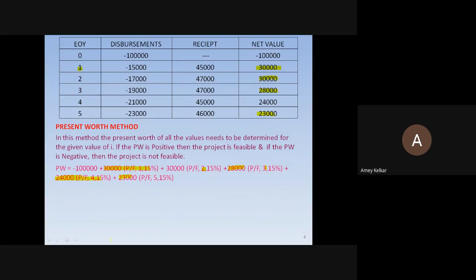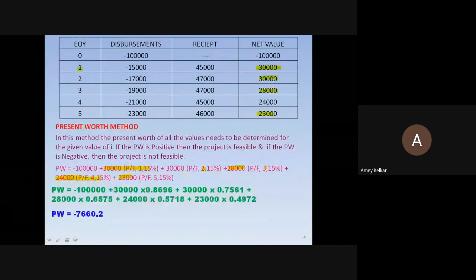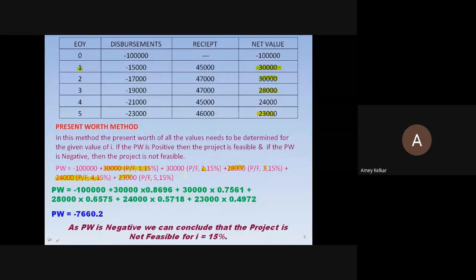We go to the finance table and refer i=15%, find the present value of future amount factor for each n. When we calculate all these factors and sum them up, we get a present worth of minus 7,660.2. Since the present worth is negative, we conclude that the project is not feasible for i = 15%.